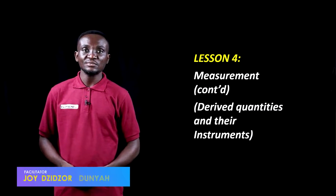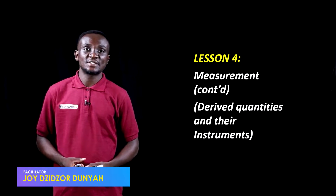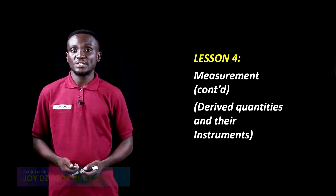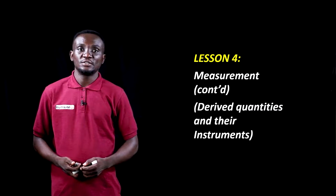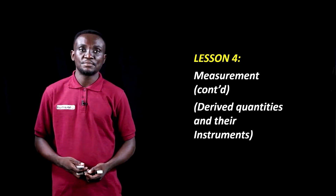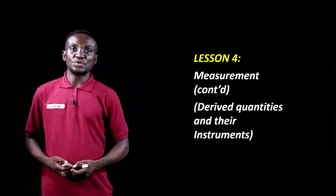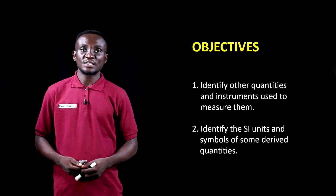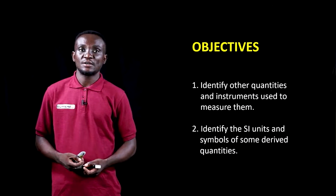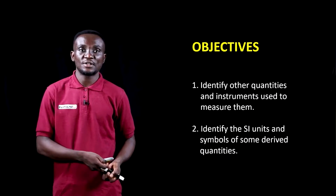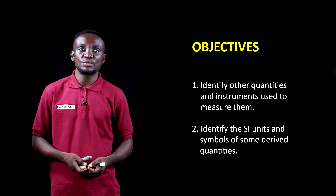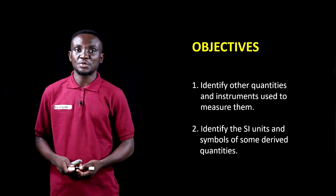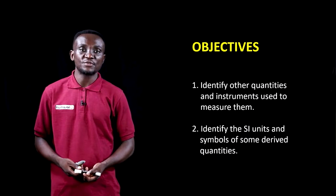Welcome to this lesson. In our previous lesson, we looked at the seven fundamental units or quantities and the instruments used to measure them. In this lesson, we are going to look at the derived quantities and their instruments. At the end of the lesson, you should be able to identify other quantities besides the fundamental quantities, the instruments used to measure them, and the SI units and symbols of some derived quantities.